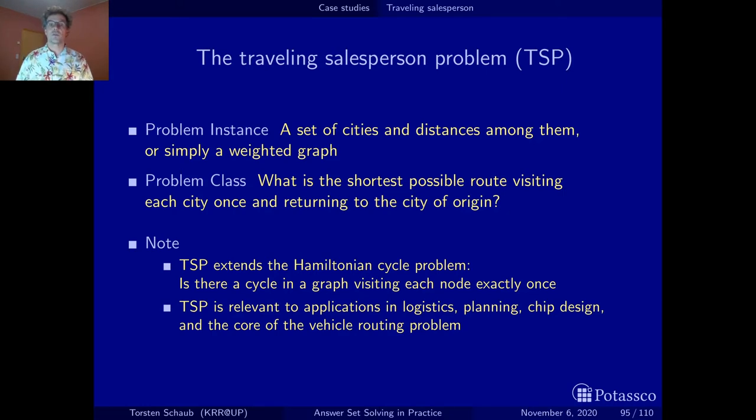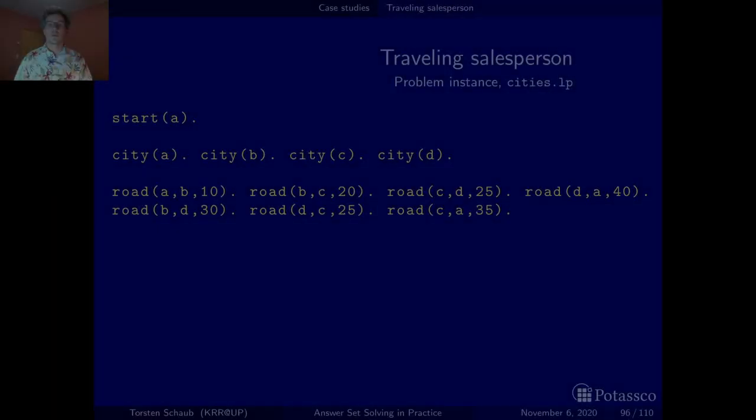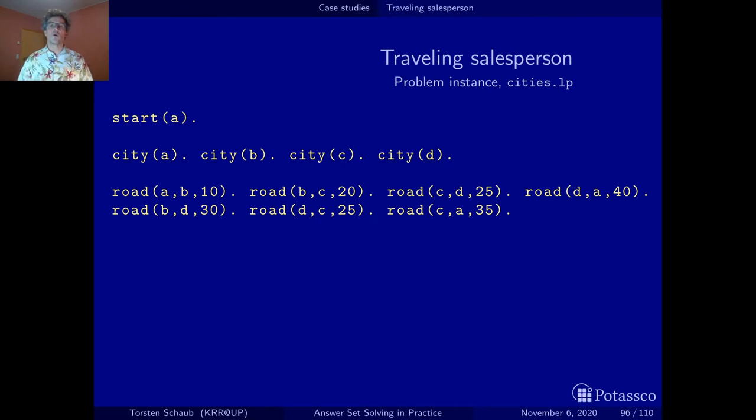Let's look at the encoding. But before looking at the actual encoding let's look at an exemplary problem instance. So we have here a weighted graph that consists of four nodes which we call cities A, B, C, and D. And we have weighted edges among them so there is an edge from A to B and the weight on this edge is 10. So there is a road from A to B and this road is 10 kilometers long.